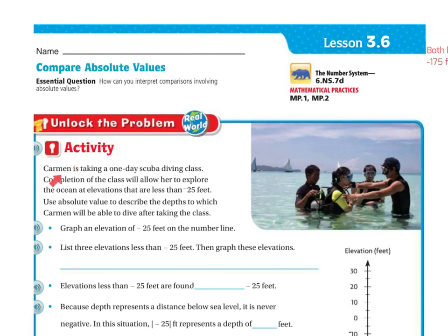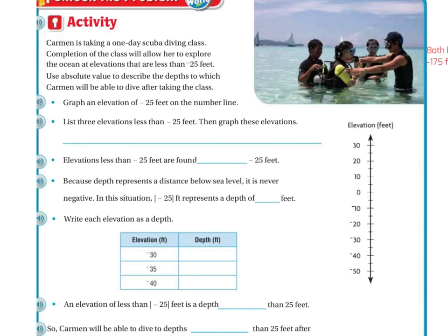Activity. Carmen is taking a one-day scuba diving class. Completion of the class will allow her to explore the ocean at elevations that are less than 25 feet. Graph the elevation of negative 25 feet on the number line. Let's do that. So negative 25 feet - this is 20, and this is 30, so negative 25 feet is going to be right in between.